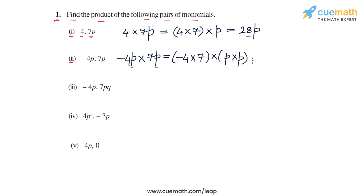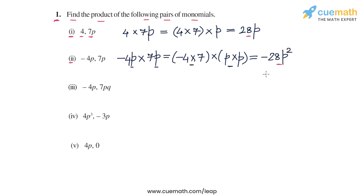So minus 4 into 7 is minus 28, and p into p is p squared. So we will get minus 28 as the coefficient and p squared as the algebraic part. So minus 28p squared is the product in part 2.